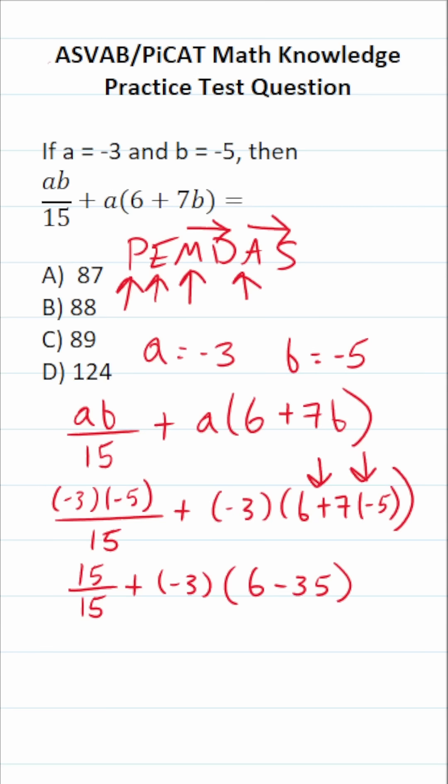All right, let's keep working this out. You should know 15 divided by 15 is 1. So this is 1 plus negative 3 times. And we still have something in parentheses here to work out. So we're still working inside our parentheses over here. 6 minus 35 is going to be negative 29.